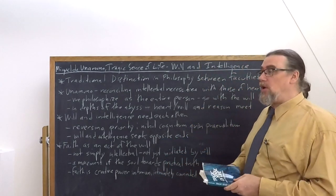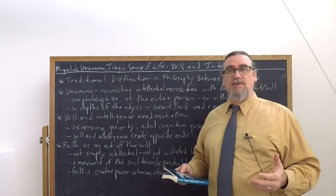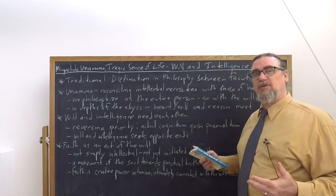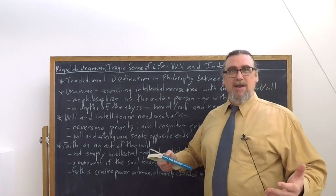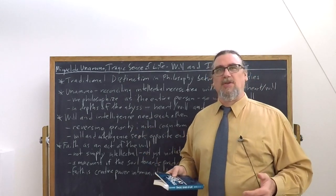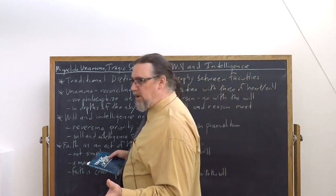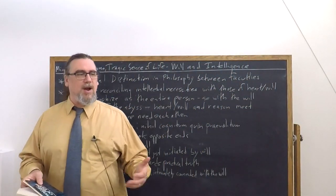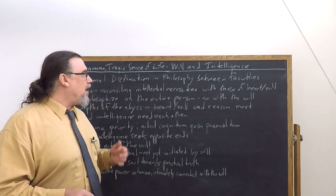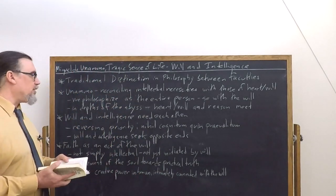So Unamuno is actually going against a lot of philosophical tradition, but he's also in many respects echoing a number of different important thinkers throughout philosophical tradition. He identifies some of these who we nowadays call existentialists, but we might also think of others as well.